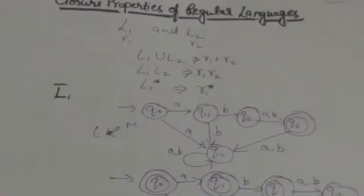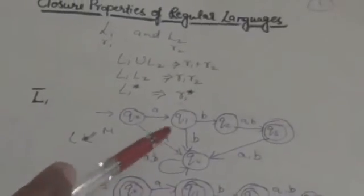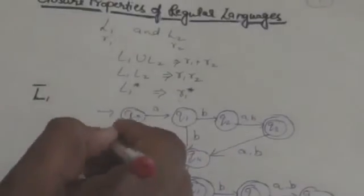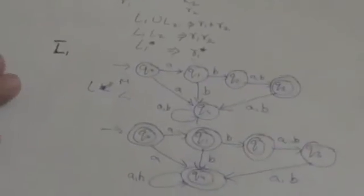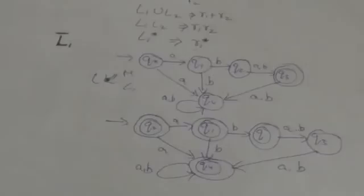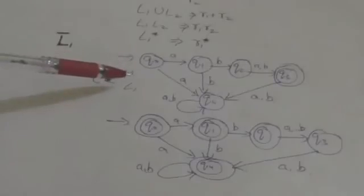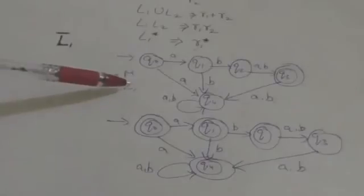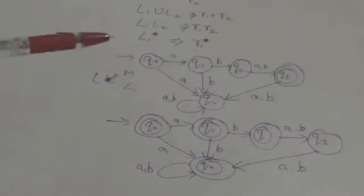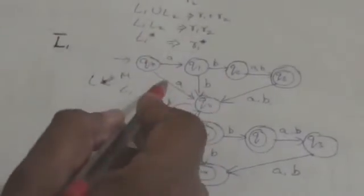L1 complement will be the set of all strings which are not present in set L1. L1 complement will be a regular language if there is some finite automata that will accept all strings of set L1 complement. Suppose this is a finite automata which accepts the language L1. Now we have to make a finite automata which will accept the language L1 complement — it means we have to design a finite automata which will reject all strings present in L1 and accept all strings not in L1.